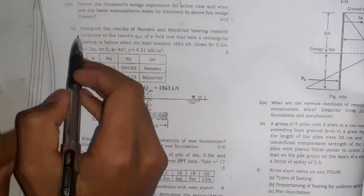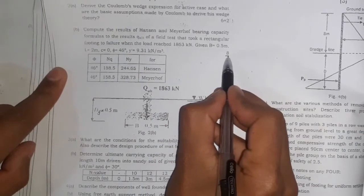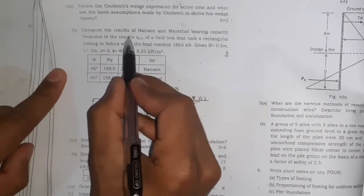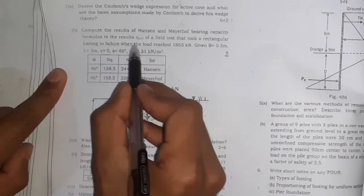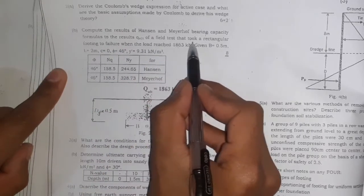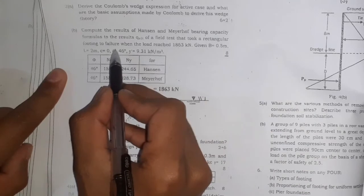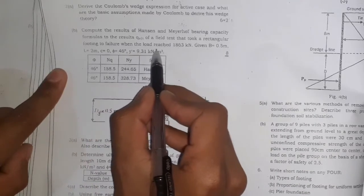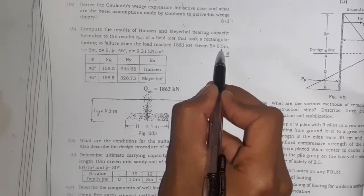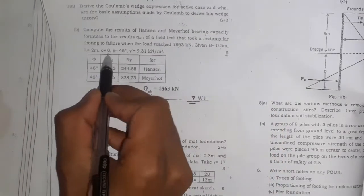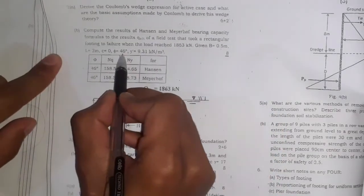2017 question from university. The question asks to compute the result of Terzaghi and Meyerhof bearing capacity formulas and compare to the result of a field test on a rectangular footing that failed when the load was 1863 kilonewton. Given: B = 0.5 meter, L = 2 meter, c = 9.31 kN/m², φ = 46 degrees, γ = 19.31 kilonewton per meter cube.